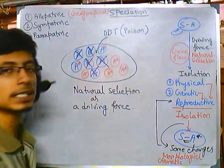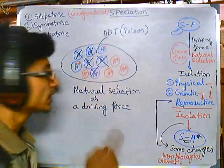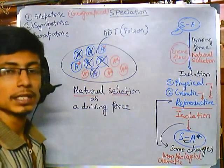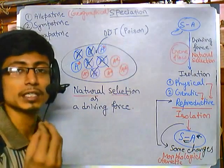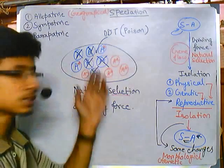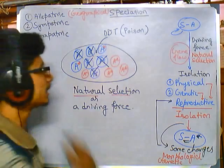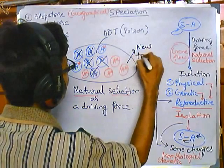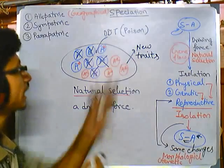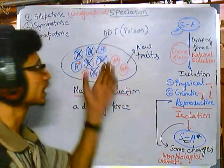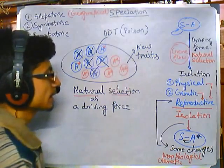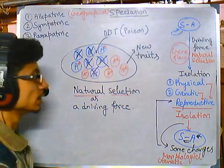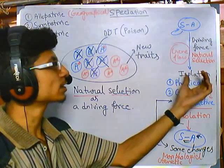These new members, designated by the red color, arise due to natural selection — they are naturally selected to survive in the region due to gaining the DDT-resistant trait. As time goes on, they start gaining new traits, shown here in a new color. As they gain these new traits, they become increasingly separated from the previous blue-colored members.